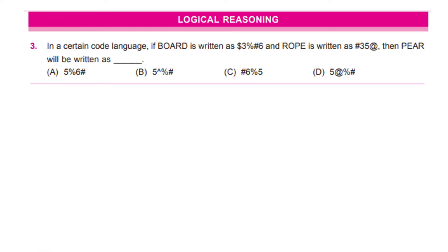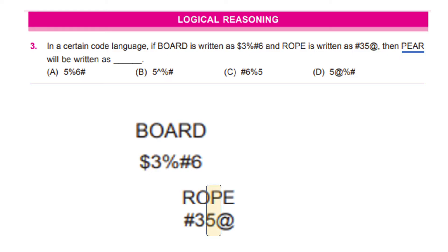Well, for my answer, how I solve it is first I write what board and rope signify and then I mark the letters for pair which is P which is a 5, E which is at the rate, A which is percentage and R which is a hash sign and if we match it, it is option D which correctly spells pair when coded in these codes.